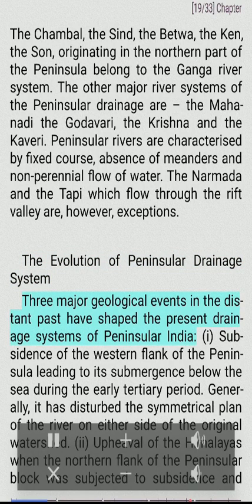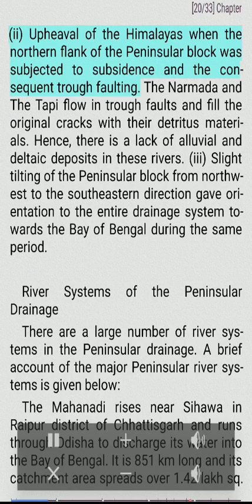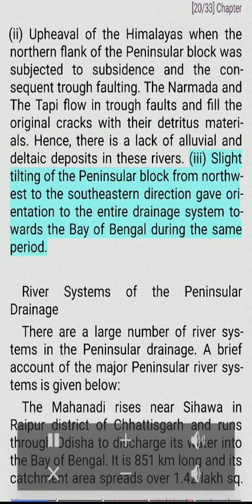Three major geological events have shaped the present drainage systems of peninsular India: (i) Subsidence of the western flank of the peninsula below the sea during the early Tertiary period, which disturbed the symmetrical plan of the rivers. (ii) Upheaval of the Himalayas when the northern flank of the peninsular block was subjected to subsidence and trough faulting — the Narmada and Tapi flow in trough faults. (iii) Slight tilting of the peninsular block from northwest to southeast, which gave orientation to the entire drainage system towards the Bay of Bengal.